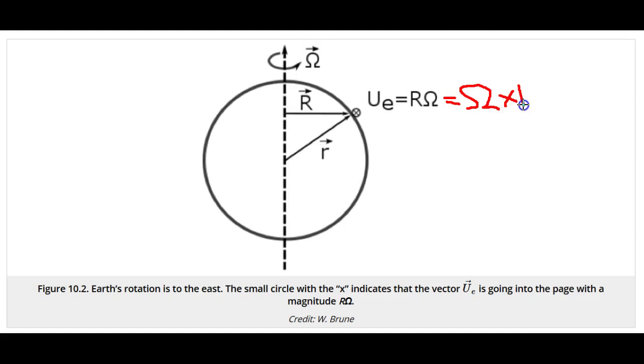The units of omega are seconds to the minus one, which makes it a frequency. Note that U_e equals r times omega, which is also equal to omega cross r.